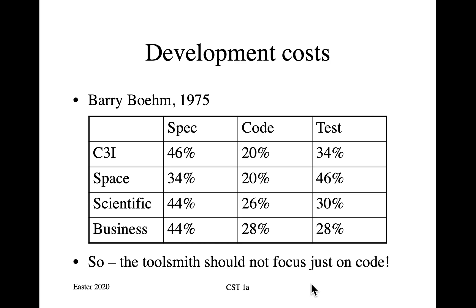With scientific programming, you put almost half the effort into the spec, with the rest divided between coding and testing, because understanding the problem and the numerical analysis techniques is most of the work. Business software was initially similar, and the people who wrote the first word processors and spreadsheets had to put serious effort into figuring out what they were trying to do. However, by the 1990s this had changed. Famously, in the late 1990s, Bill Gates asked whether he was running a software company or a testing company, because Microsoft was by then putting more effort into testing than into writing actual code.